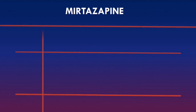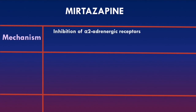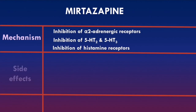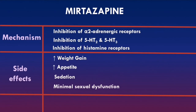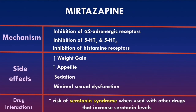In summary, mirtazapine inhibits alpha-2 adrenergic receptors on presynaptic membranes of serotonergic and noradrenergic neurons, reducing the inhibitory response and leading to more serotonin and noradrenaline being released. It also inhibits 5-HT2 and 5-HT3 receptors, leading to more free serotonin binding to 5-HT1 receptors. Mirtazapine also inhibits histamine receptors. Side effects include weight gain and increased appetite, which can be a positive effect, sedation due to histamine receptor inhibition, and notably very minimal sexual dysfunction side effects. Mirtazapine also has an increased risk of serotonin syndrome with other serotonergic drugs.